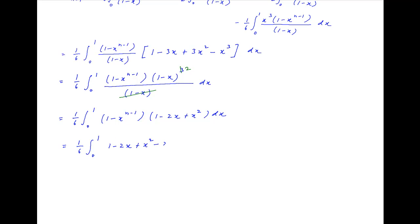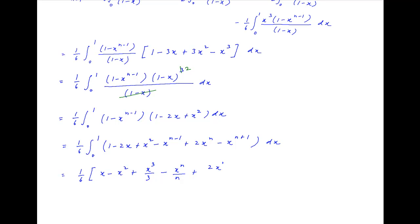This expands to (1/6)·∫₀¹ [1 − 2x + x² − x^(n−1) + 2x^n − x^(n+1)] dx. Evaluating the integral gives (1/6)·[x − x² + x³/3 − x^n/n + 2x^(n+1)/(n+1) − x^(n+2)/(n+2)] from 0 to 1.